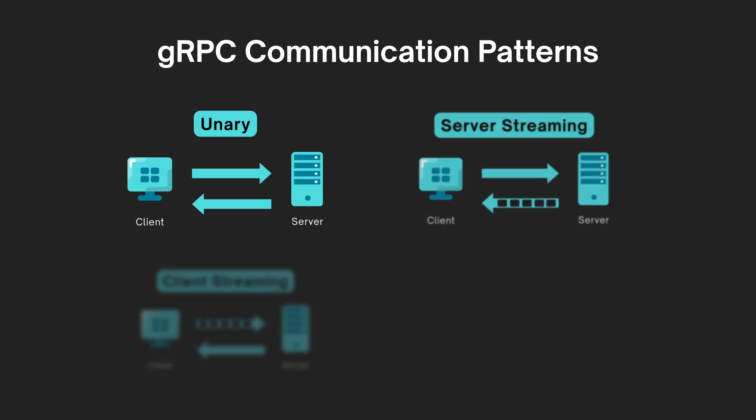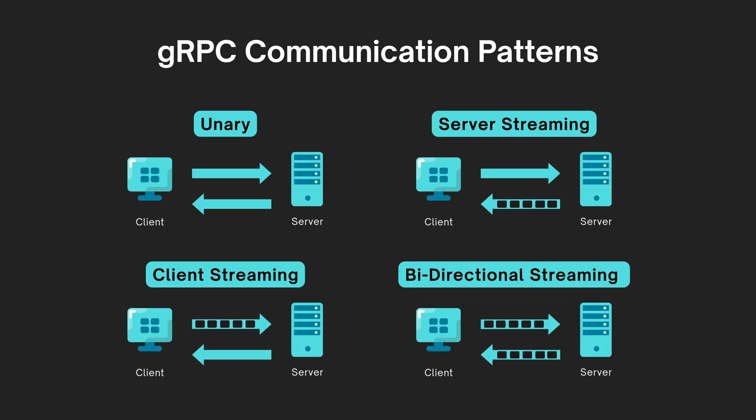One of the powerful features of gRPC is that it's not just limited to traditional request-response. gRPC supports different types of calls — unary, server streaming, client streaming, and bi-directional streaming — giving you flexibility depending on your use case.